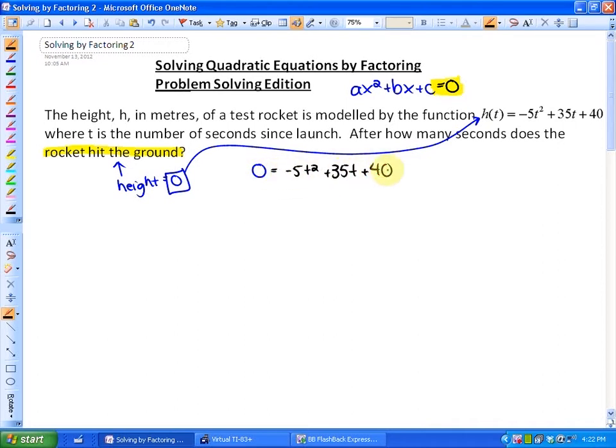And wouldn't you know that we have now a standard form function that we can solve by factoring. So if I factor out the greatest common factor of negative 5, we'll have negative 5, and the remaining trinomial will be t squared minus 7t minus 8, and that remaining trinomial can be factored as t minus 8 and t plus 1, two numbers that multiply to negative 8 and add to negative 7.